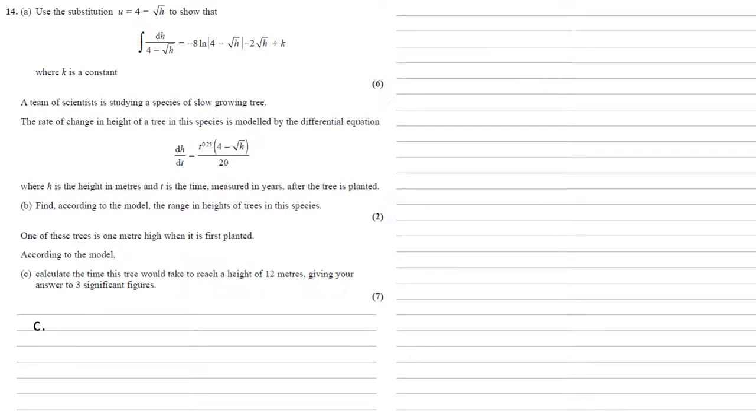Part C. One of these trees is 1 metre high when it's first planted. According to the model, calculate the time this tree would take to reach a height of 12 metres, giving your answer to three significant figures. So we've given our differential dh by dt in part B.